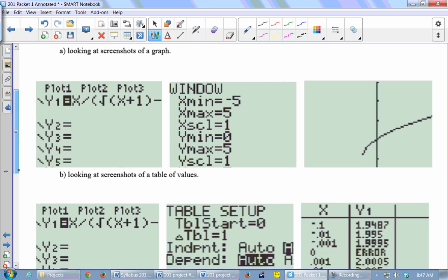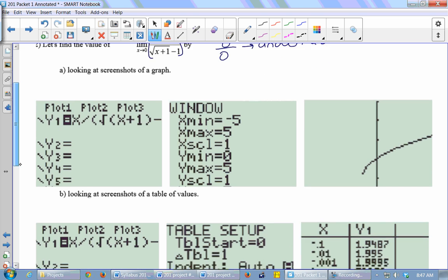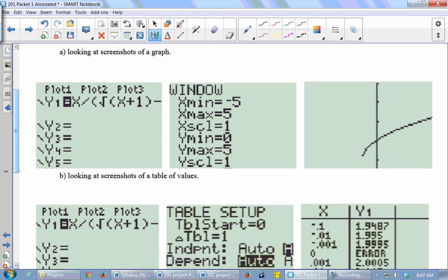So here's some screenshots that I took from my TI. So in y1, I just wrote the expression, this x over the square root of x plus 1 minus 1. I picked a good window, and then here's my graph. And this is the y-axis, so this is the line x equals 0.